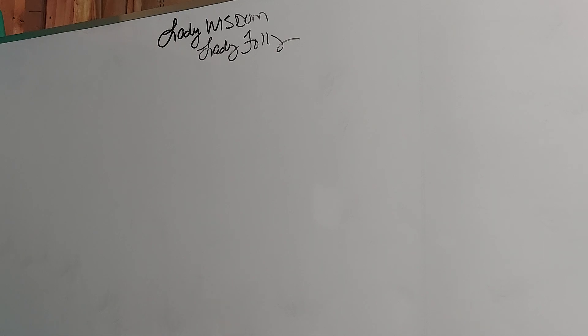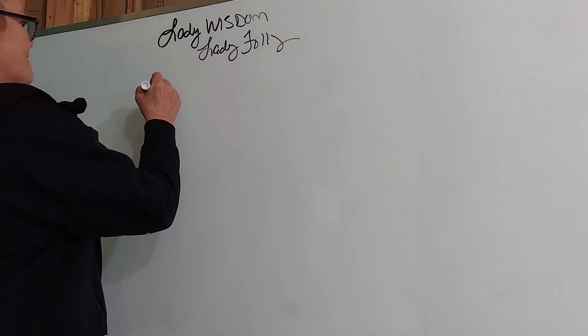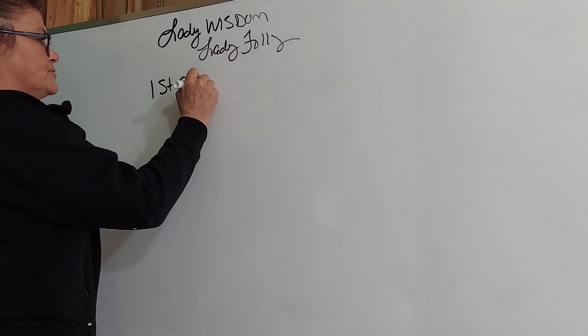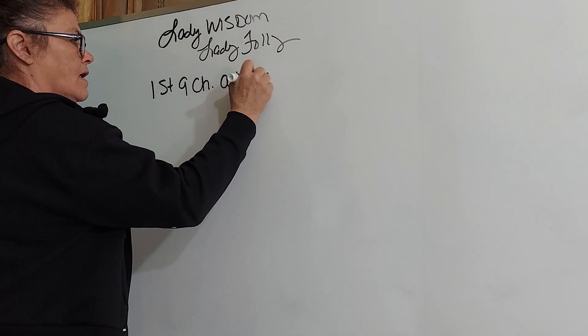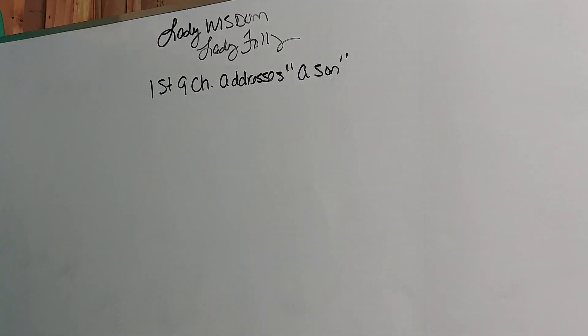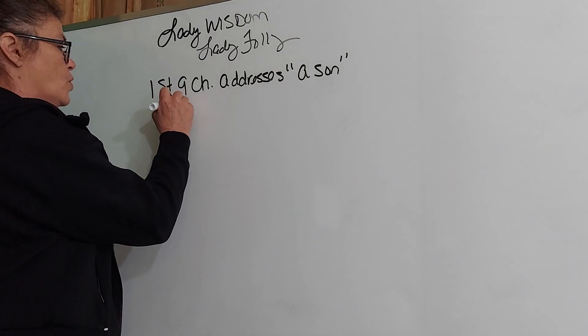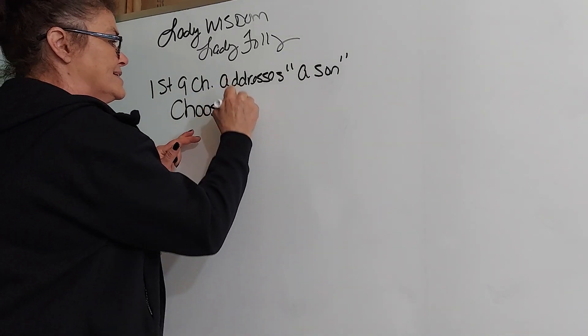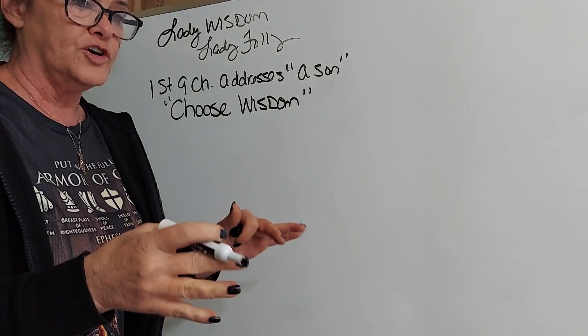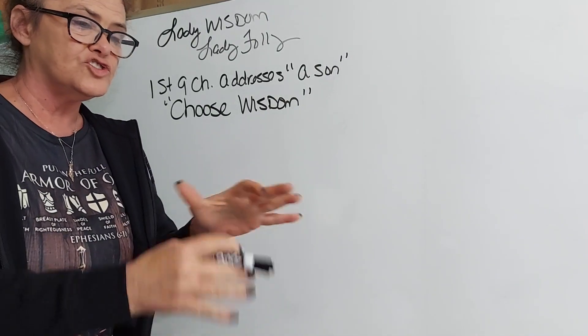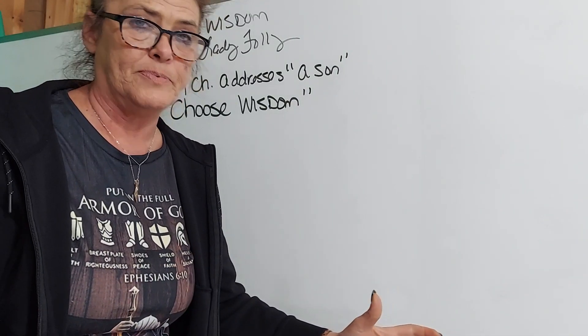Although the book addresses men only, as was traditional in the ancient societies, it's meant for all of God's people, men and women alike. In the first nine chapters, the book addresses a son. For young men, the choice of the right woman in life is challenging. Proverbs invites you to make an equally life-changing choice. Choosing wisdom over folly changes lives in a very powerful way. Remember I told you we're here to make choices. Choose wisdom.